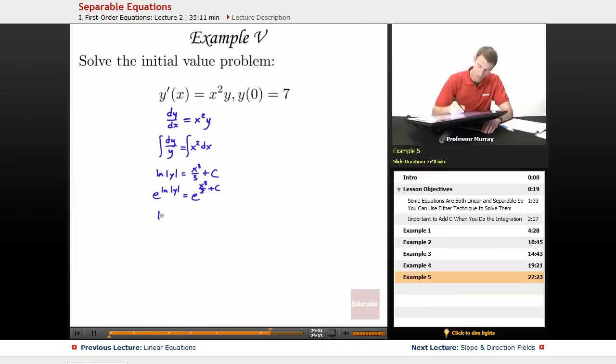And so, I've got absolute value of y is equal to, so now my laws of exponents here tell me that this is e to the x cubed over 3 times e to a constant, not added to e to a constant, but multiplied by e to a constant. And so y is equal to plus or minus e to a constant. Think of that as a single constant, e to the x cubed over 3.